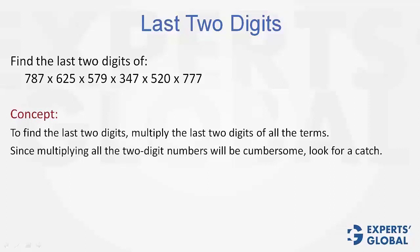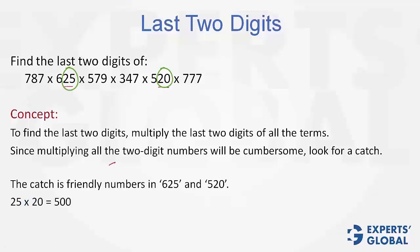Since multiplying all the 2-digit numbers will be cumbersome, you will always find a catch. The catch in this question is the friendly numbers 20 and 25. If you multiply 25 and 20 first, we get a double 0 at the end.